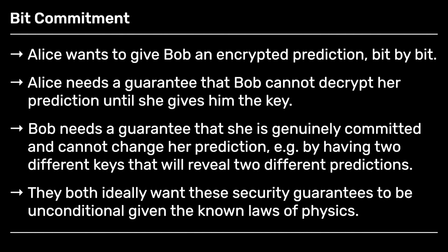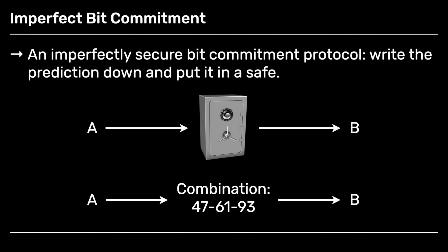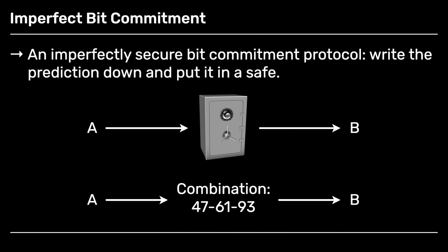So ideally they would like perfect security for their guarantees. But there seems to be some sort of tension between these guarantees — you can see how you could do one perhaps, but then the other one looks rather hard, and vice versa. So let's start with a simple illustration of a protocol that clearly isn't secure, but represents a way of doing bit commitment.